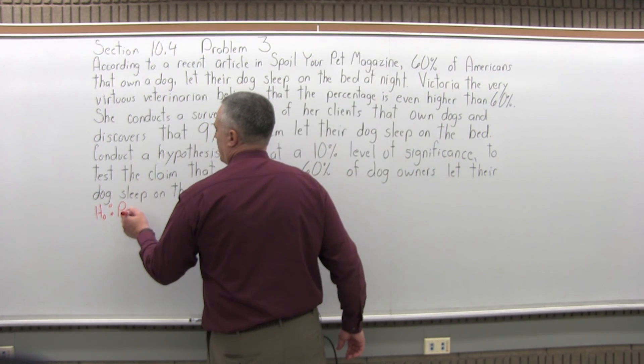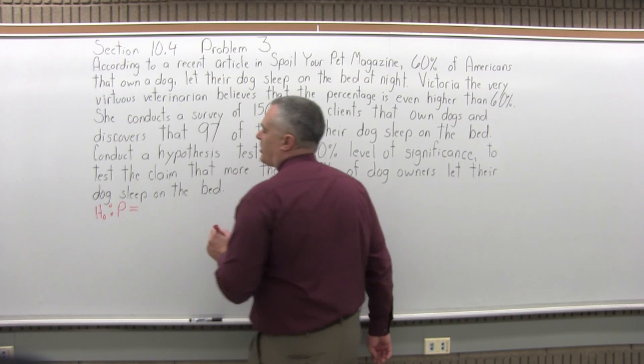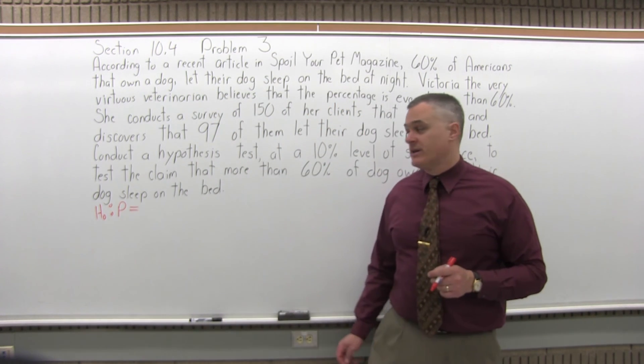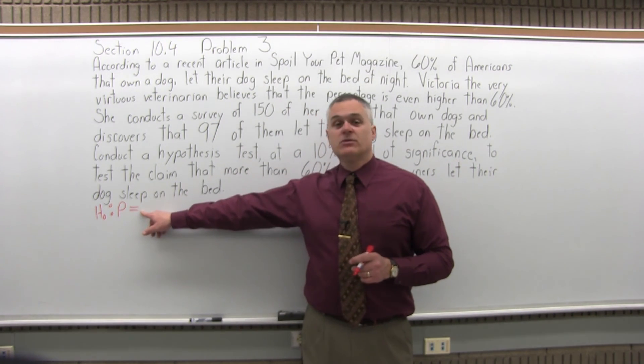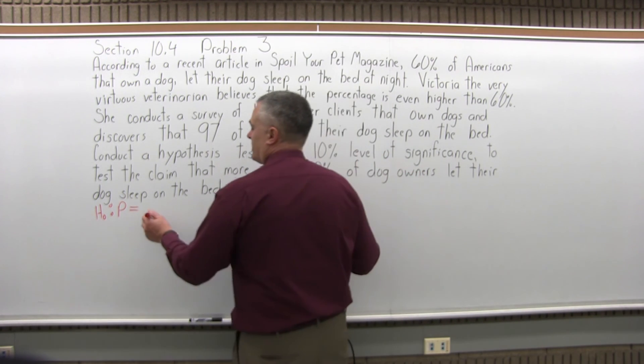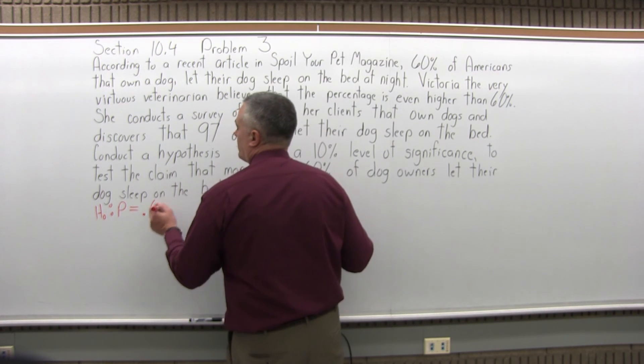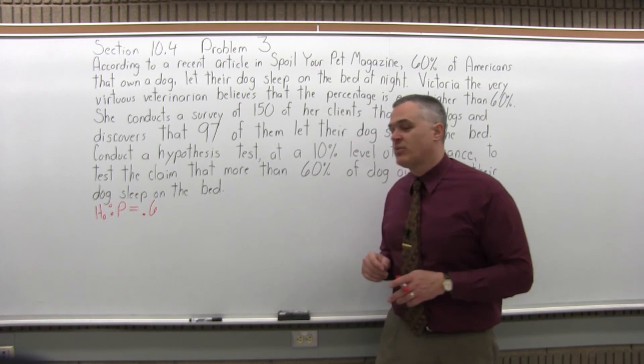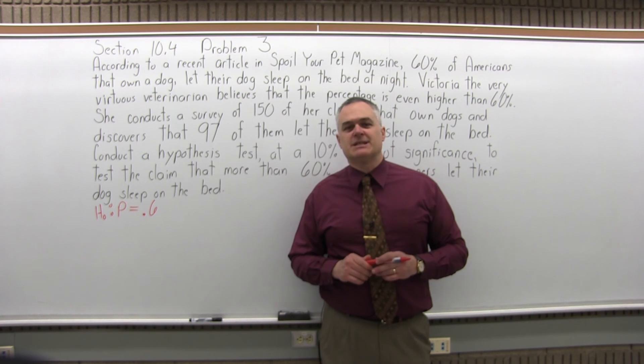The null hypothesis will have the condition of equality. So it could be equal to, less than or equal to, or greater than or equal to. In this case, we can use equal to. The percentage we want to test is 60%, written as a decimal, so we can write 0.60 or 0.6.